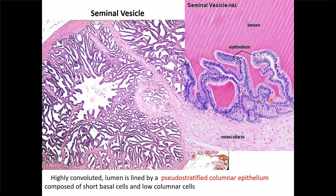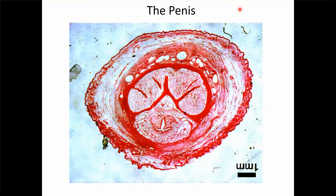Now the penis. You can see that there are totally three muscular bodies. The corpora cavernosa on two sides and the corpora spongiosum with the penile urethra opening.